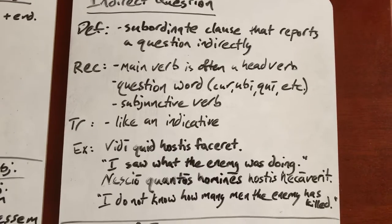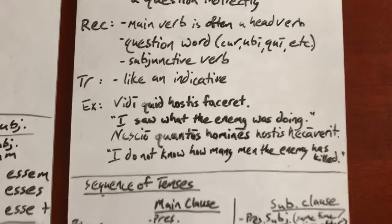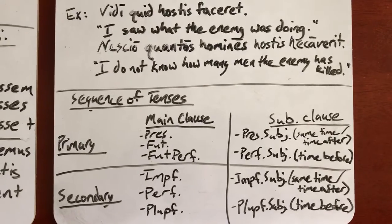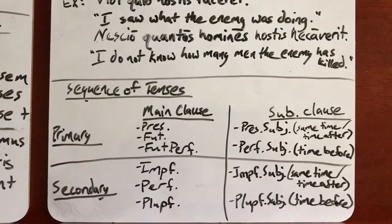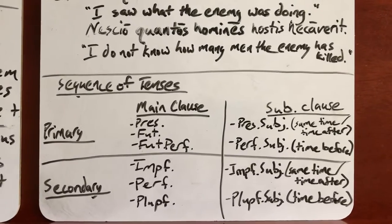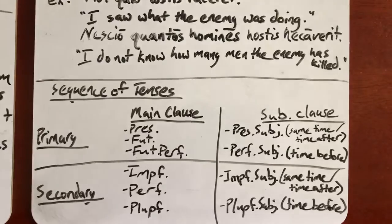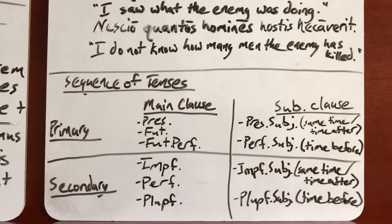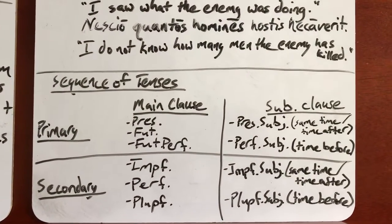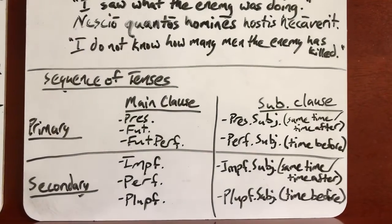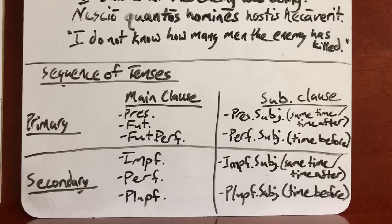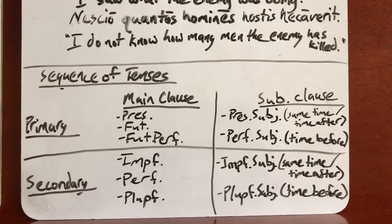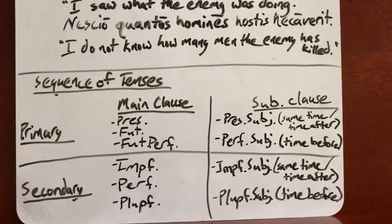There is one other grammar thing to be familiar with, and this is something that Latin authors are very careful about following. You don't have to worry about it too much if you're translating because it'll already be done for you, but if you're putting something into Latin it's very helpful to know. It's also helpful because it enables you to see how Latin authors are working. This is called sequence of tenses. A sequence is just a pattern or order — a way in which things are done. There are two sequences: primary sequence and secondary sequence.